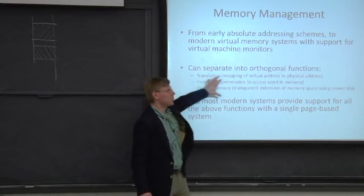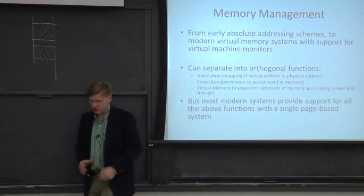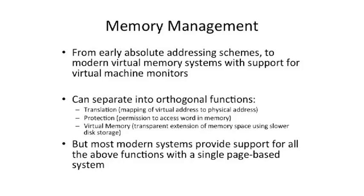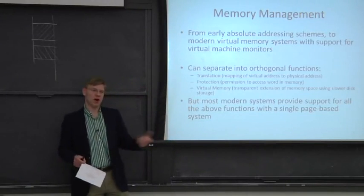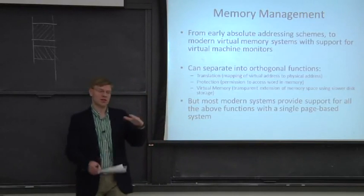We can broadly separate memory management into three important and orthogonal functions. First, translation: we take one address and turn it into some other address, remapping addresses. By doing that, we can have more flexible memory layouts and prevent fragmentation. Fragmentation is the problem that if you have lots of little pieces of data or code that get loaded and then some complete or go away, you end up with holes in your memory space that are very hard to reclaim unless you try to compress or re-lay out the memory.